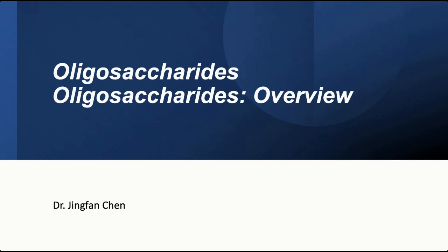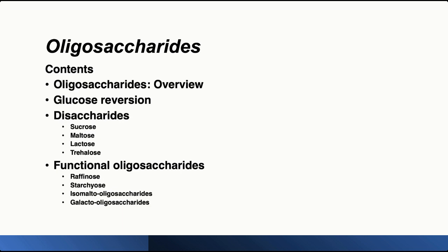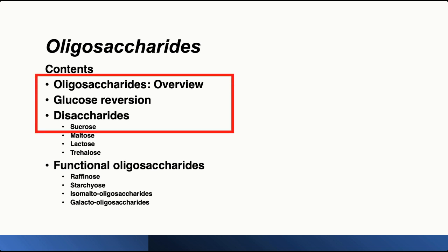Hello everyone, thank you for attending our class today. Today we're going to dive into a brand new topic: oligosaccharides. The class objectives include familiarizing ourselves with different types of sucrose products, inverted sugar, maltose, lactose and their productions, lactose intolerance, raffinols, starches, and isomalto-oligosaccharides. We'll cover three topics: oligosaccharides overview, glucose reversion, and disaccharides — focusing specifically on sucrose.